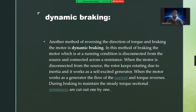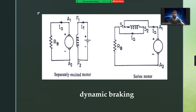So the motor works as a generator, the flow of current and torque reverses to achieve braking. The sectional resistances are cut out one by one, then the dynamic braking comes into picture. This is the self-excited motor of dynamic braking, and this is the series motor of dynamic braking. Disconnecting from supply and connecting to external resistance — that's it for dynamic braking.